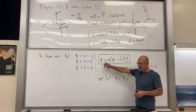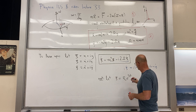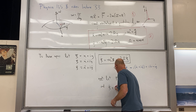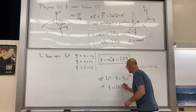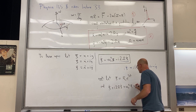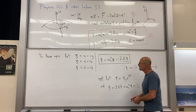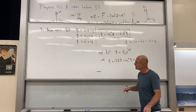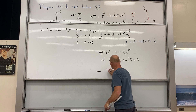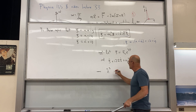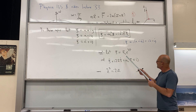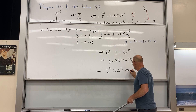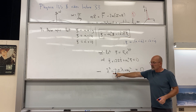Let c equal c-sub-zero times e^(lambda·t) as our trial solution. Putting it into the differential equation in standard form — c-double-dot plus 2i·Omega·c-dot plus omega-naught-squared·c equals zero — we get lambda-squared plus 2i·Omega·lambda plus omega-naught-squared equals zero.